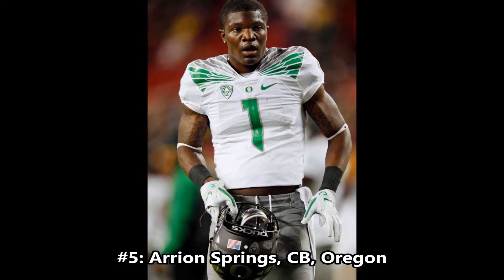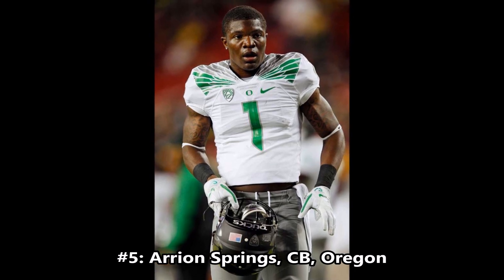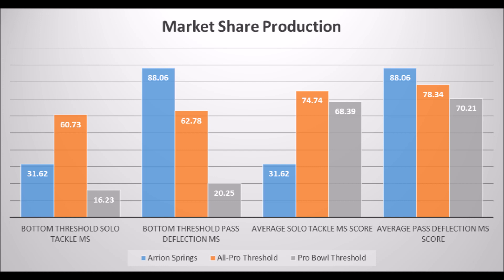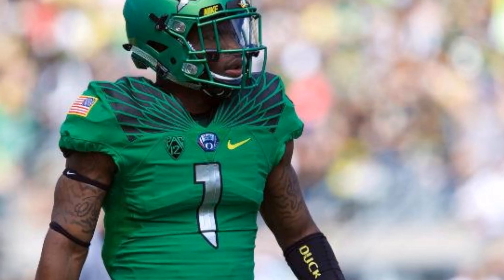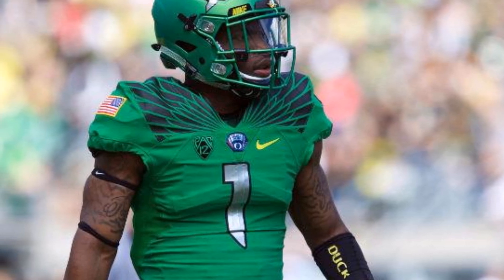At number 5, we have Arianne Springs, cornerback out of Oregon. He's 5'11", 175 pounds with a 4.54 40-yard dash. Based on his production, he had a 31.62 solo tackle market share score and an 88.06 pass deflection score. His solo tackle market share score doesn't hit All-Pro or Pro Bowl level for that particular metric — it's not amazing. But his pass deflection market share is very good and hits all the thresholds it needs to hit in terms of All-Pro and Pro Bowl thresholds.